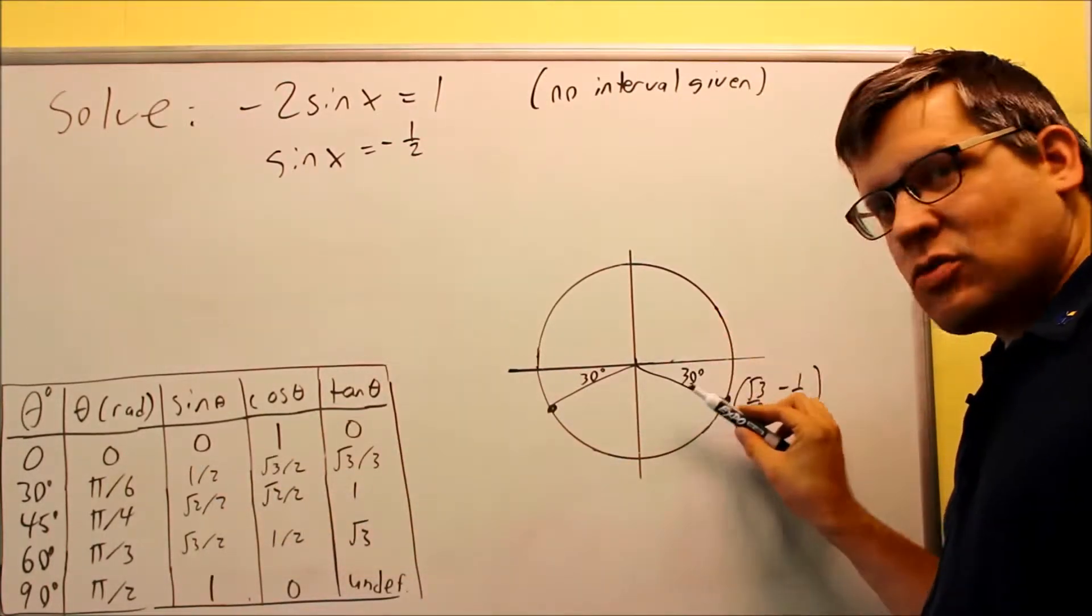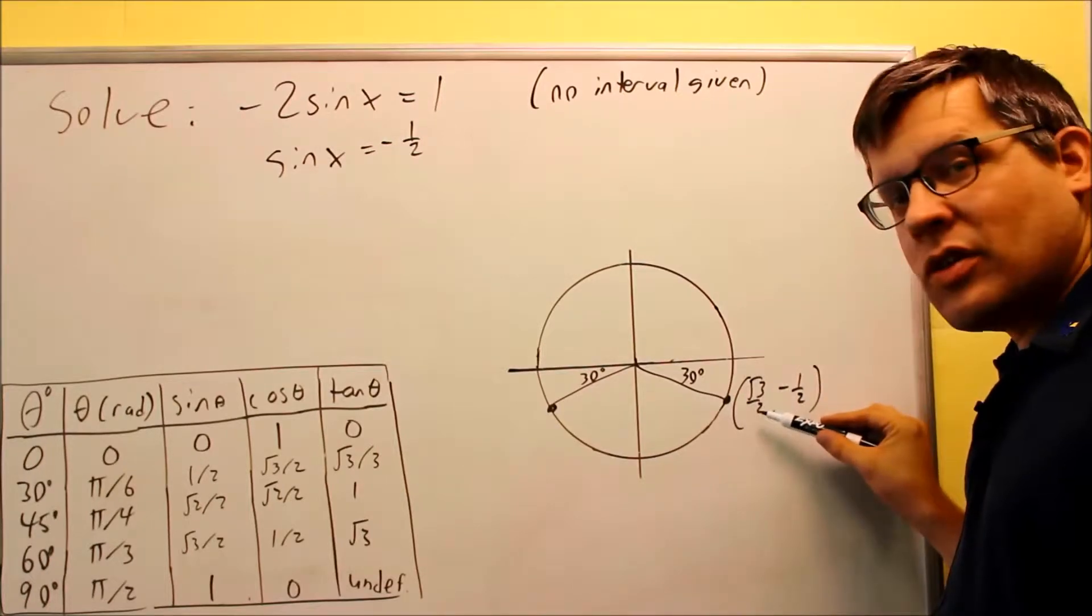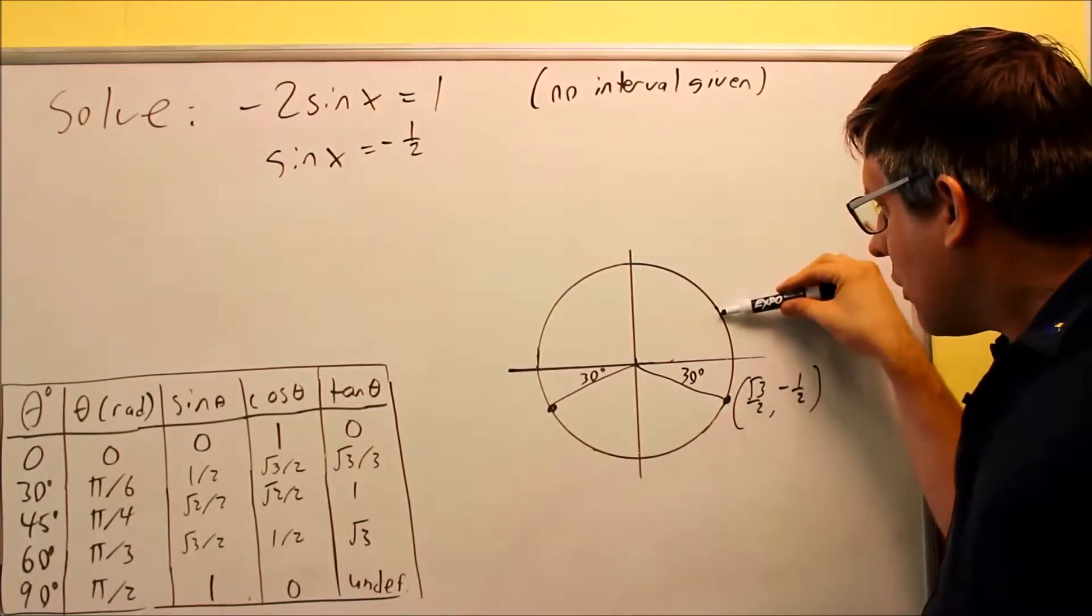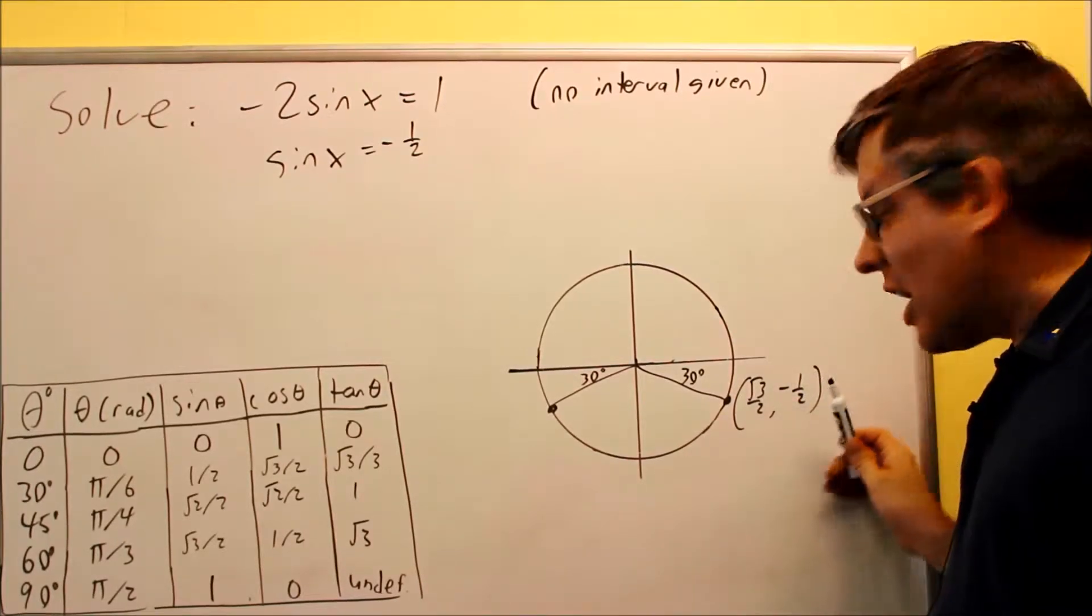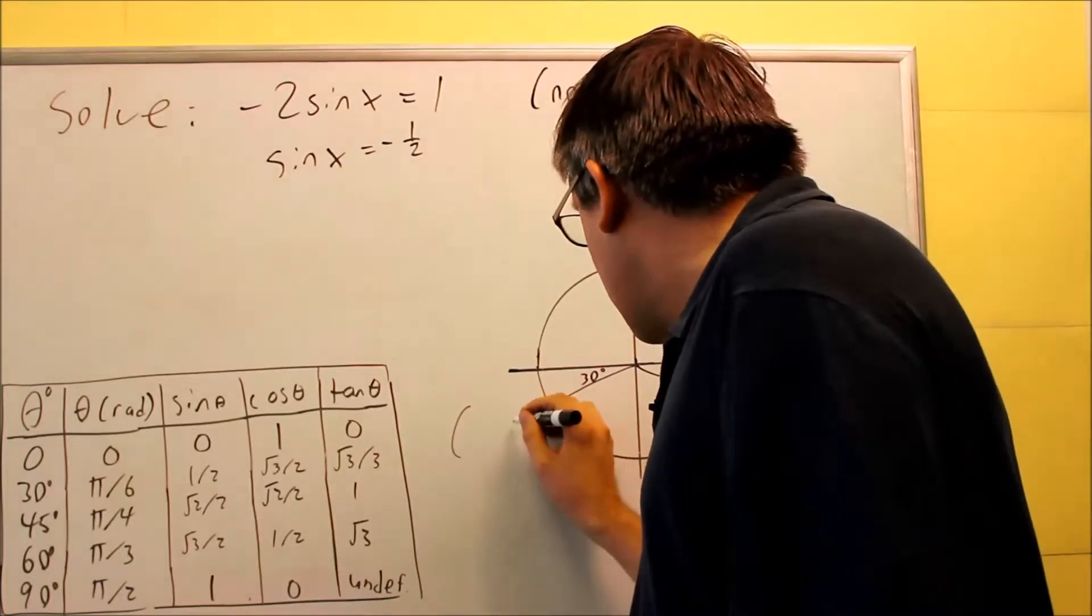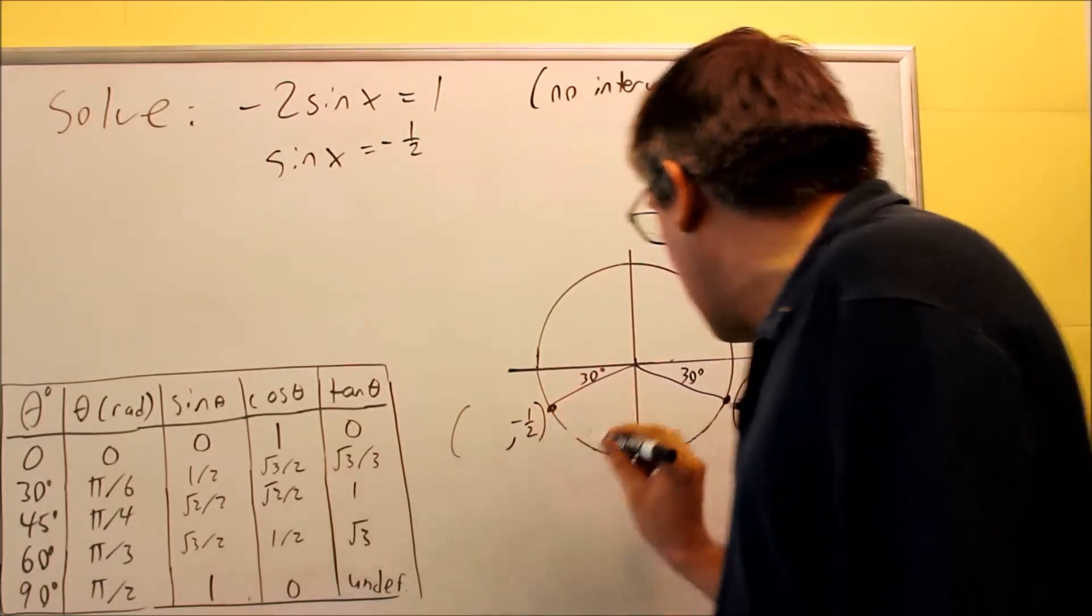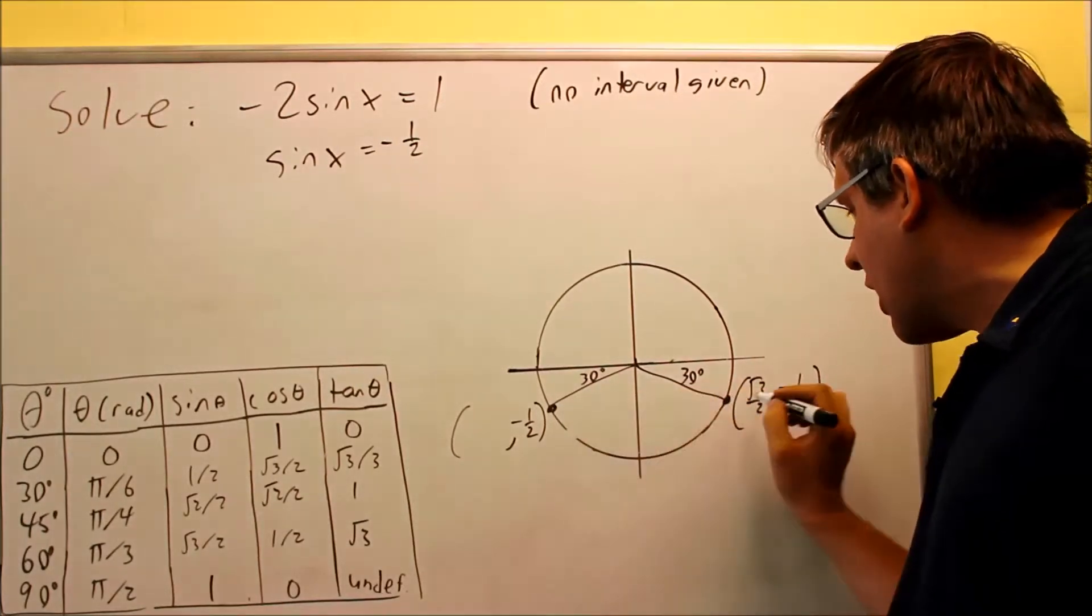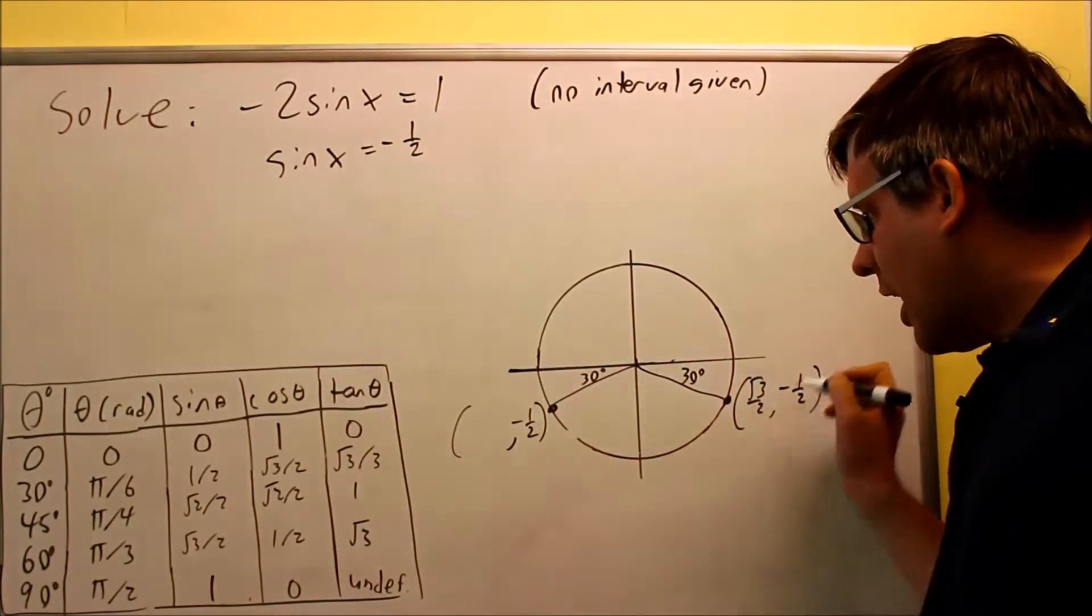However, if I go 30 degrees this way, the x value stays exactly the same, so that would still be positive square root of 3 over 2. However, if you're going from here to here, the y value changes sign, so it's going to be negative 1 half. Over here, the y value is still negative 1 half as well. If we go across the unit circle, this value and this value are exactly the same. Both of those are negative 1 half.